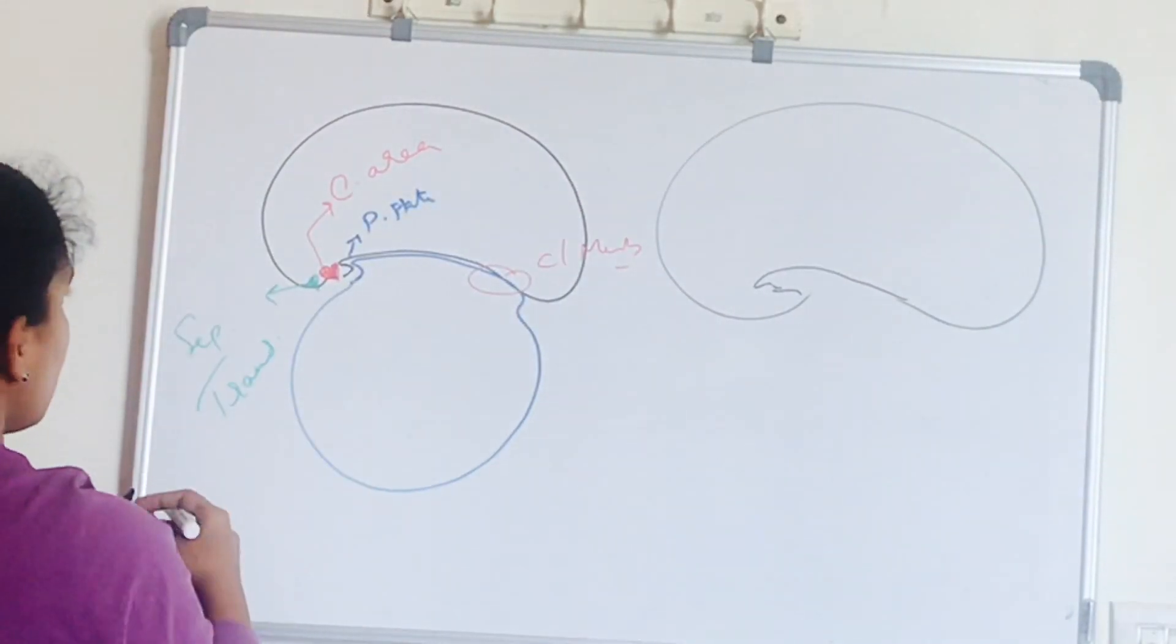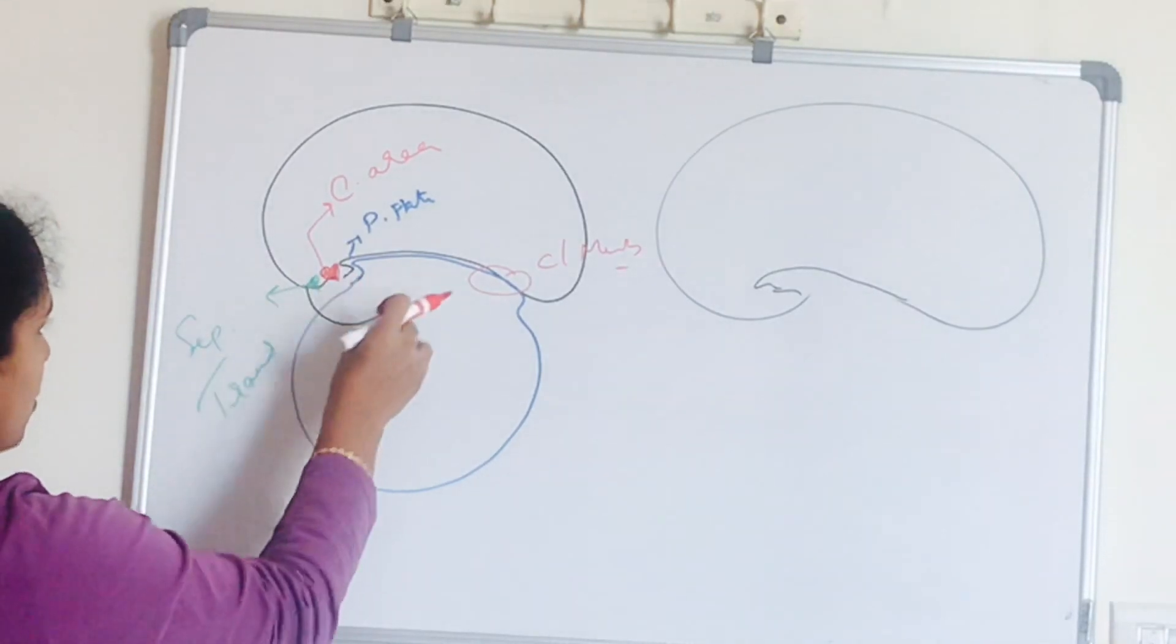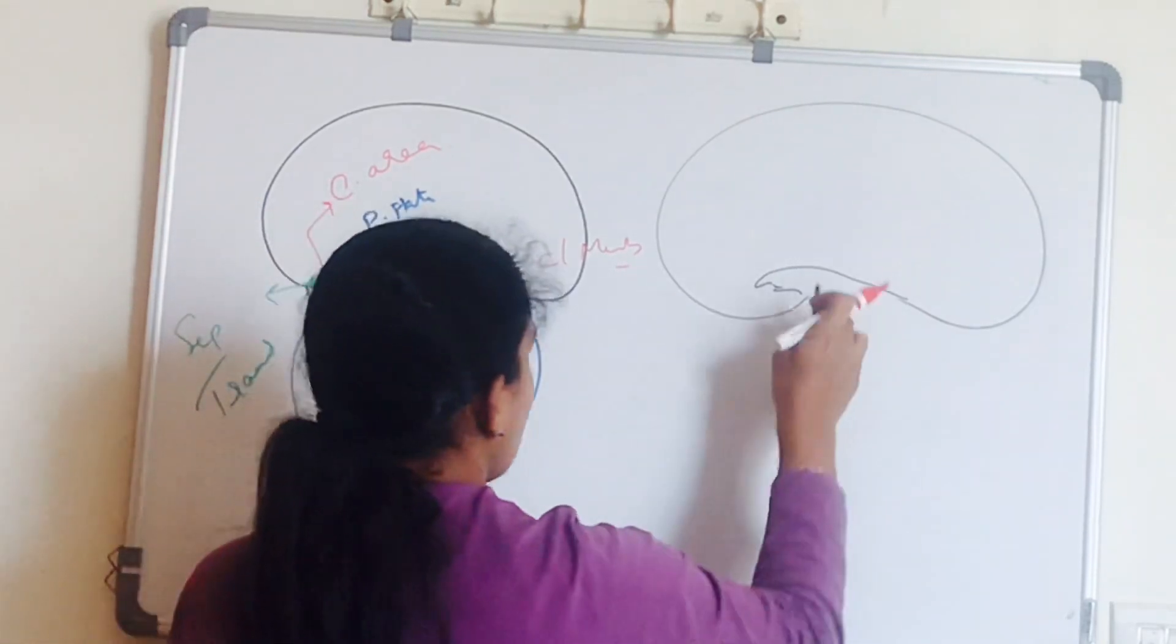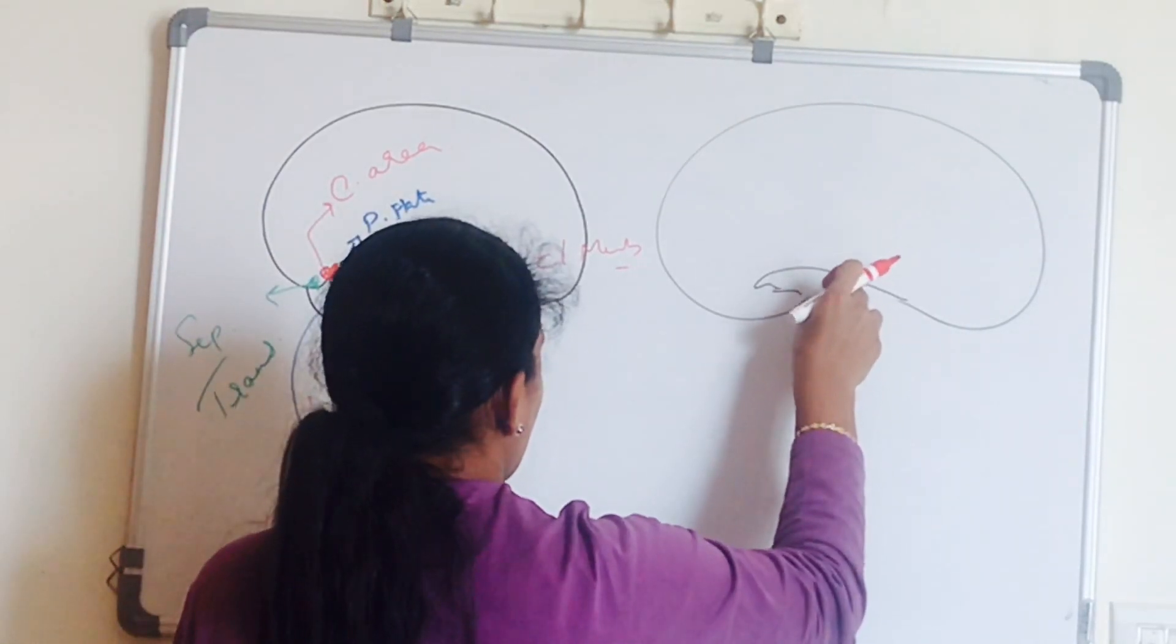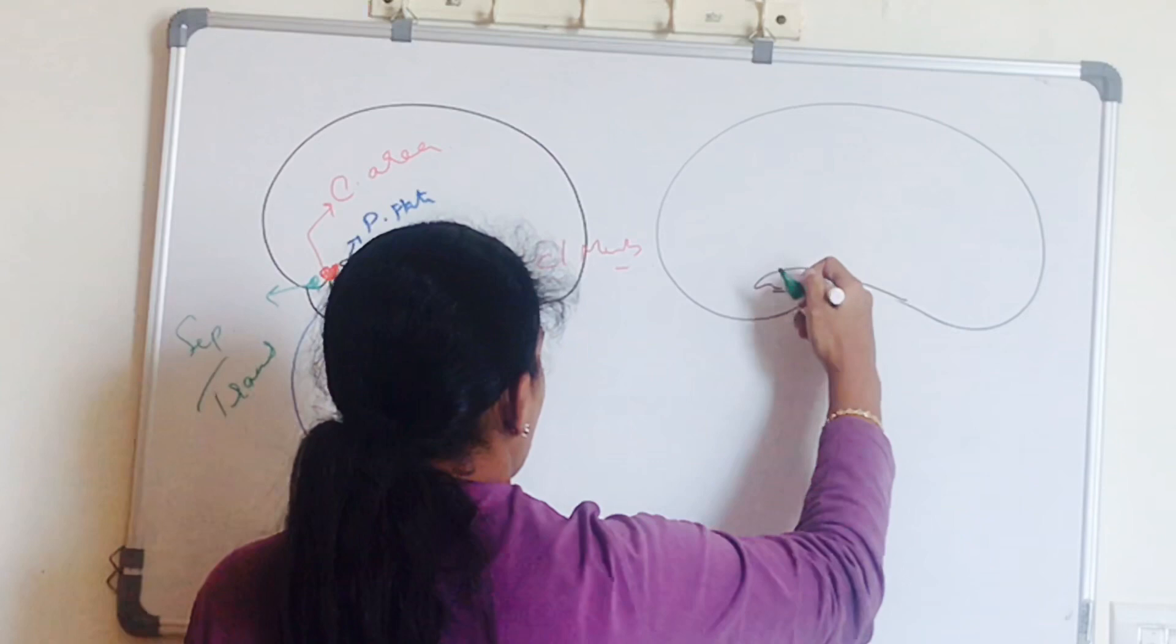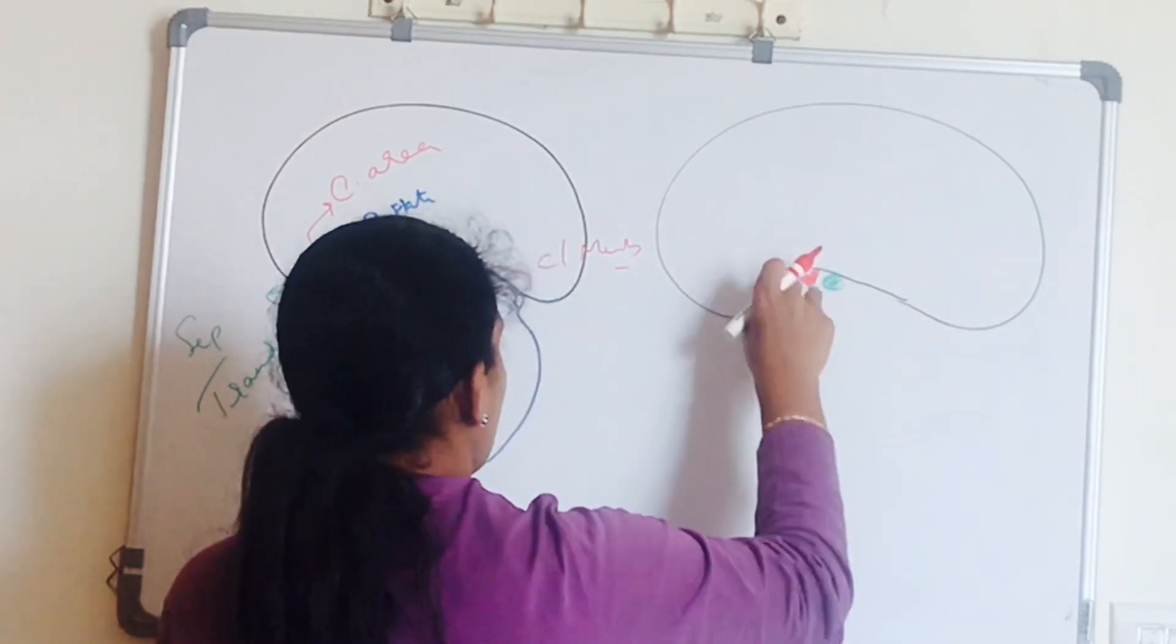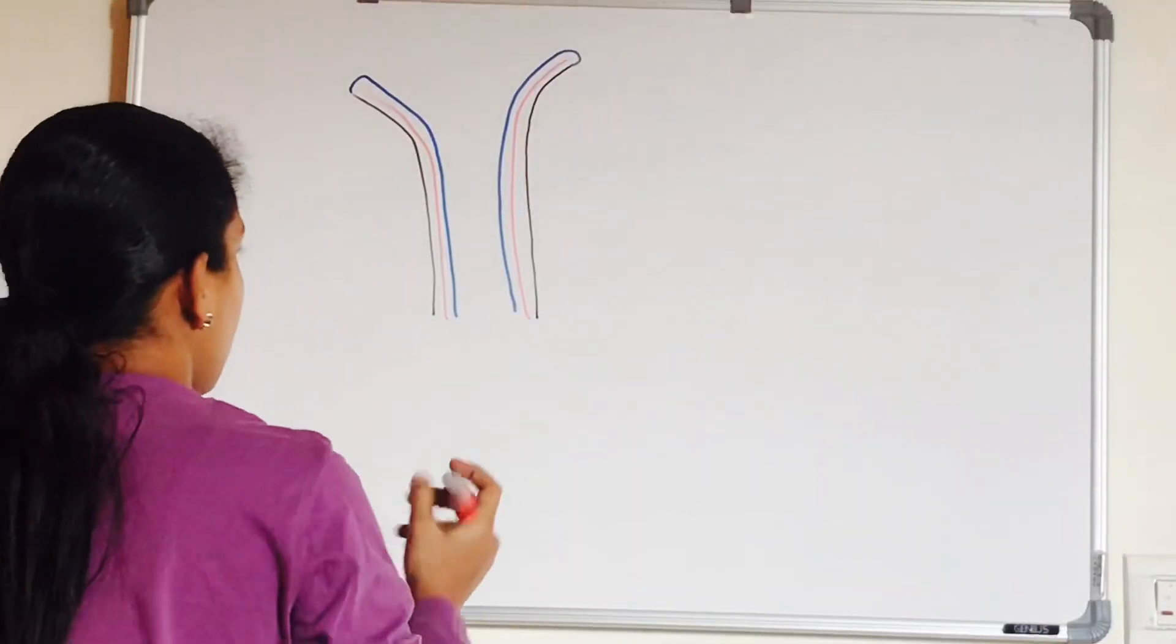You already know the ventral wall is formed craniocaudally by ectodermal stomodeum. Then you have a bulge called pericardial bulge with pericardial cavity and developing heart. Then below that we have septum transversum which gives rise to liver and diaphragm.